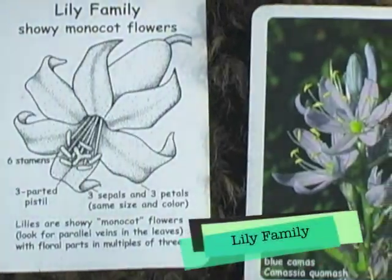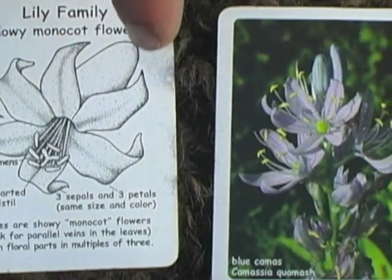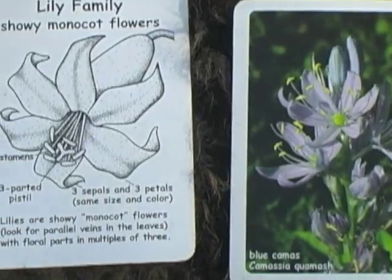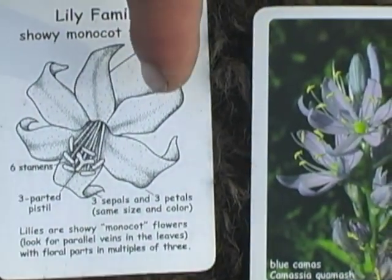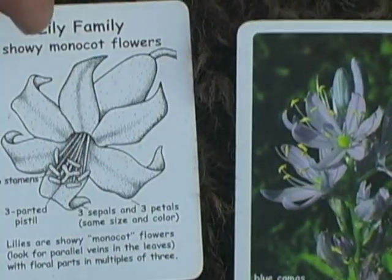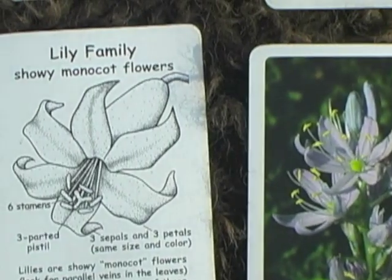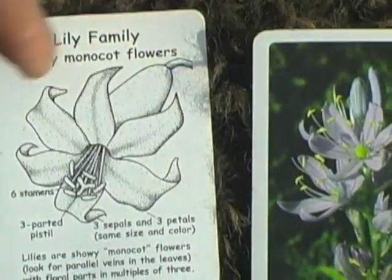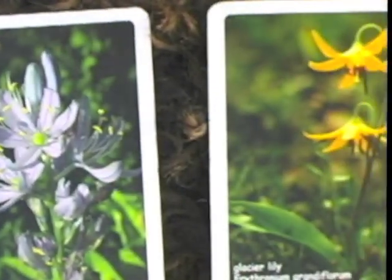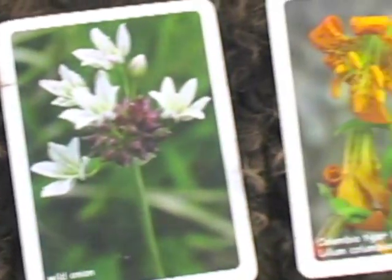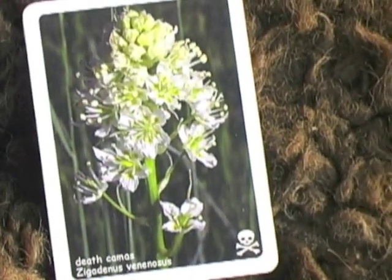The lily family looks like it has six petals, but in actuality there are two overlapping layers. The first layer is the sepals, the second layer is the petals, and they are identical in size and color, which makes it look like there are six petals. You'll see that in each of the lilies. There are some good edibles in the lilies, but there are also some highly poisonous plants as well.